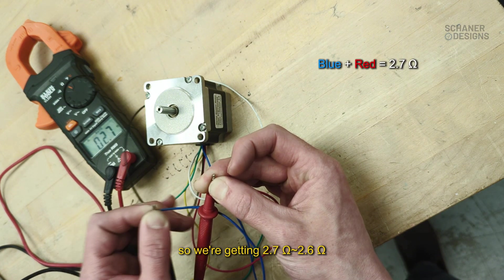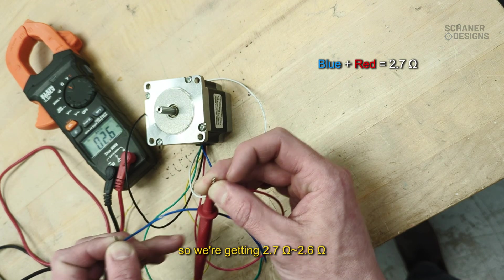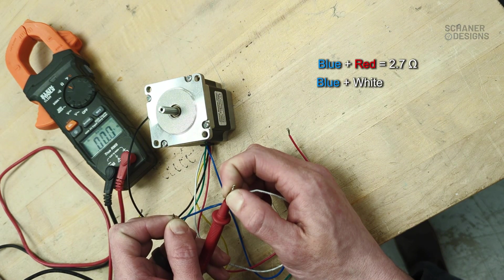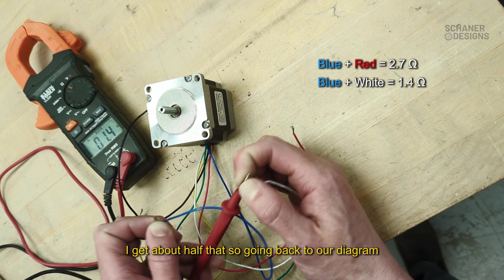We're getting 2.7 ohms, 2.6 ohms, somewhere in there. And then if I do blue and white, I get about half that.